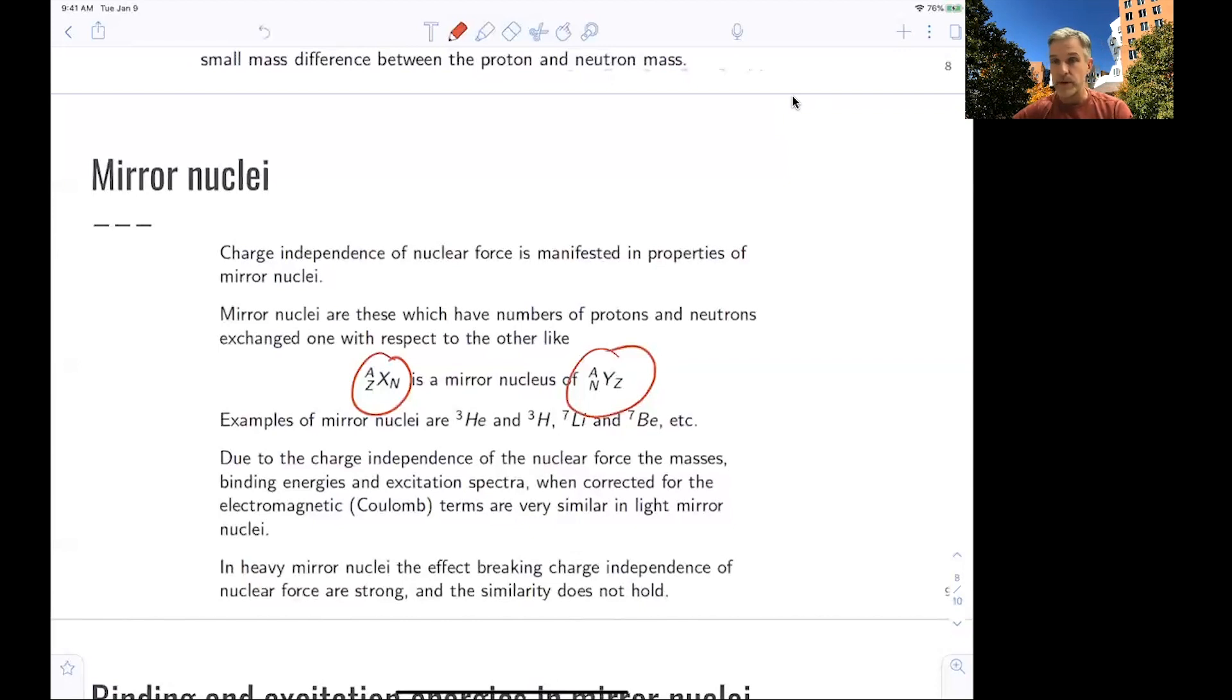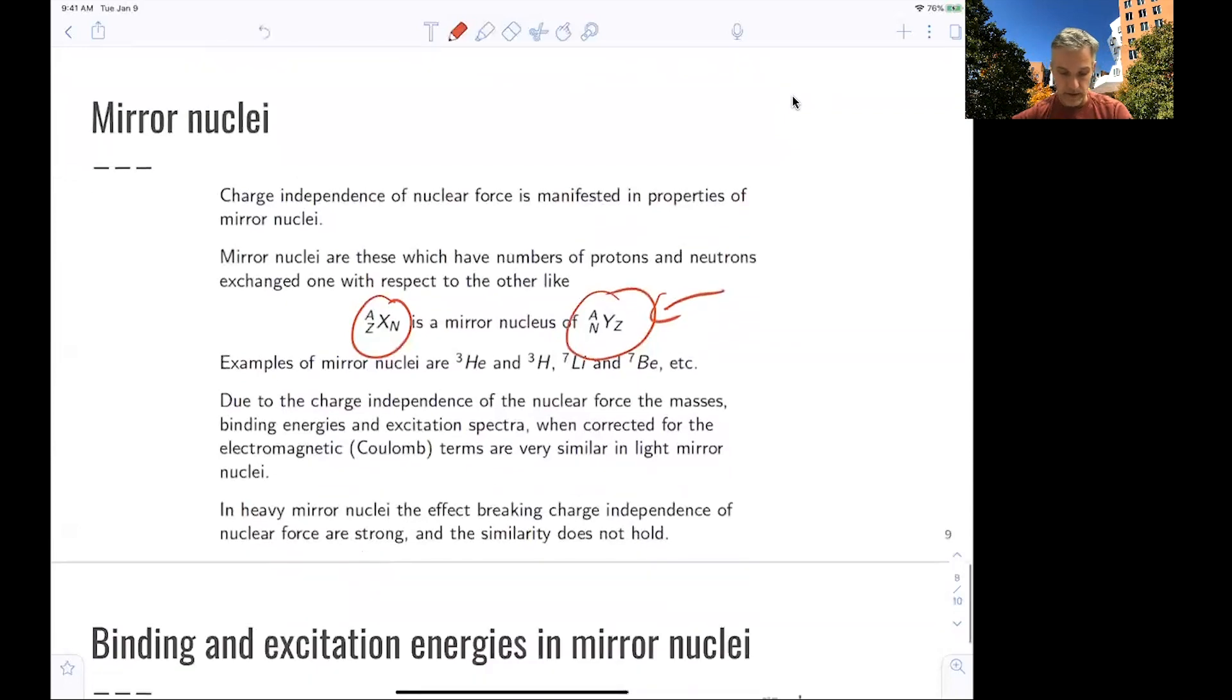One example where you can study this is, for example, one of those mirrors is radioactive or an unstable nuclei. You can study the properties of this unstable nuclei by looking in detail at the mirrored nucleus. So that's a rather common and interesting way to study radioactive nuclei, a way you cannot just simply take them, excite them, and study their properties, simply because they decay too fast in some cases.